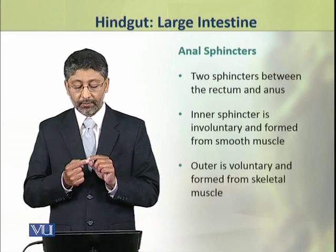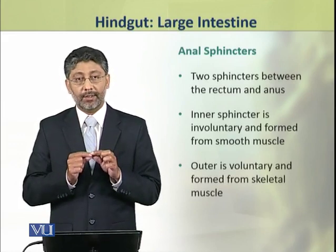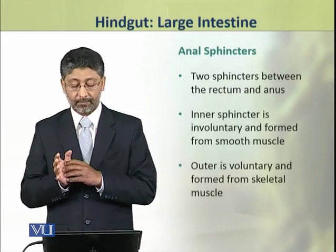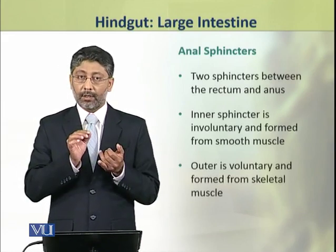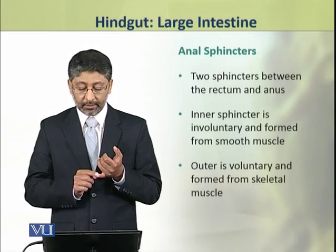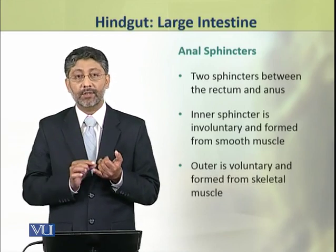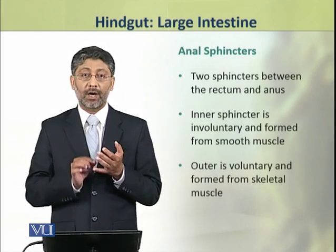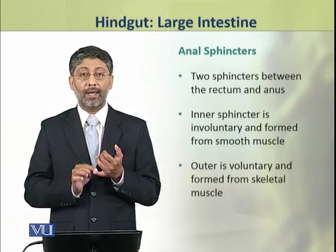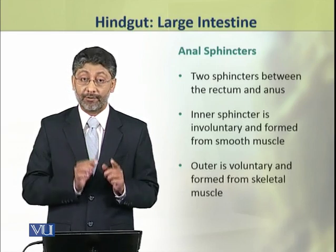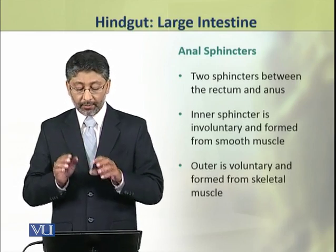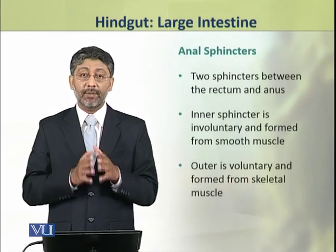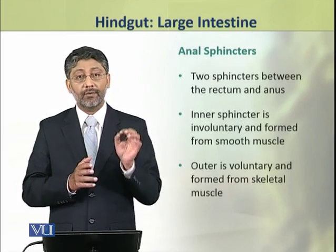There are two sphincters lying between the rectum and anus. The first is the inner sphincter and the second is the outer sphincter. The inner sphincter is composed of smooth muscles and is involuntary, while the outer sphincter is made up of skeletal muscles and is voluntary.